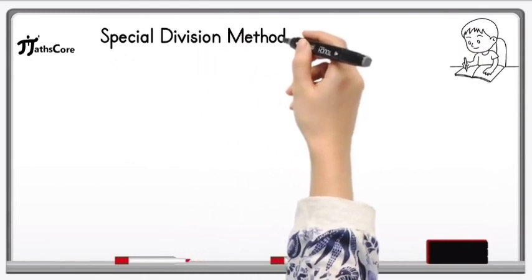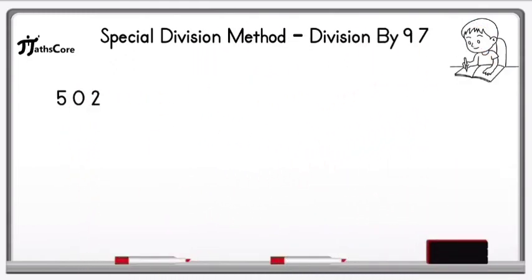Let's solve some examples on division by 97. First example is 502 divided by 97.